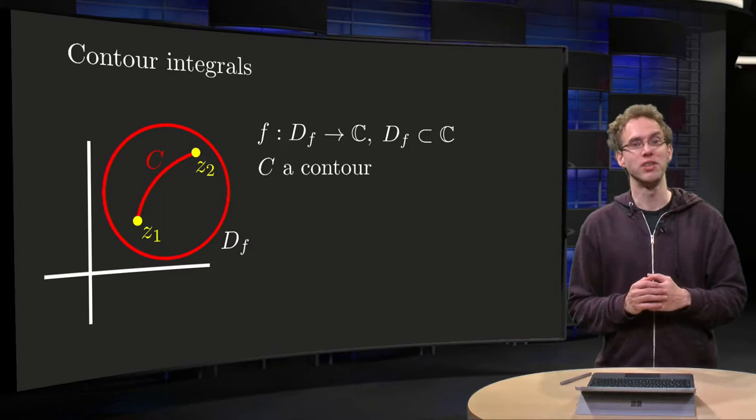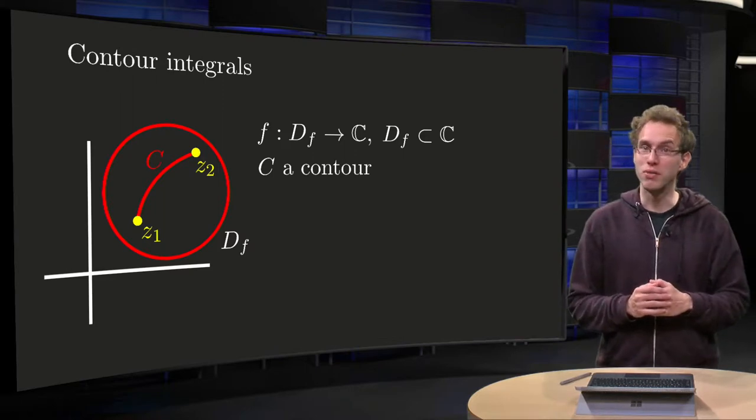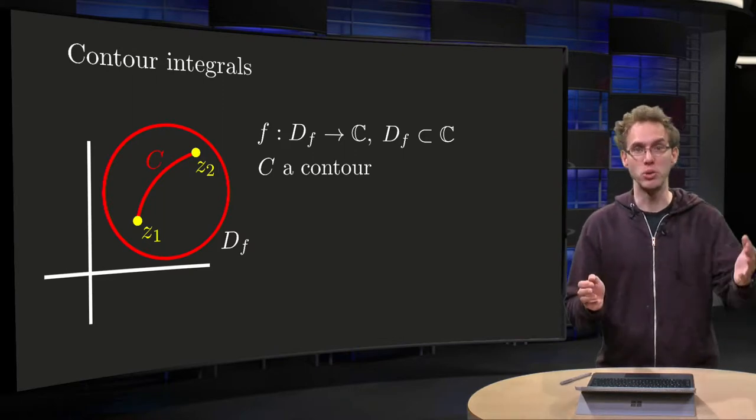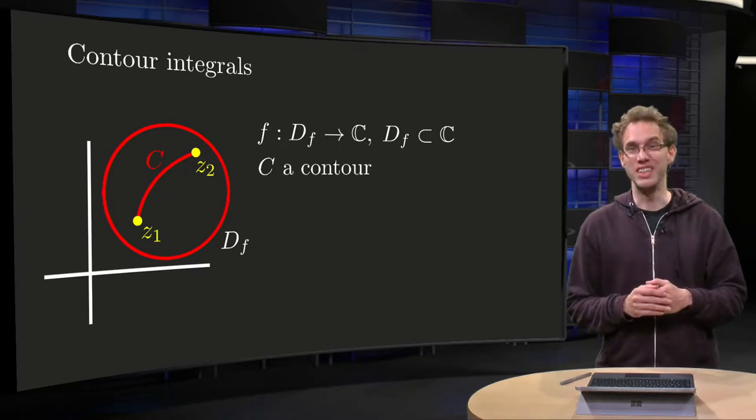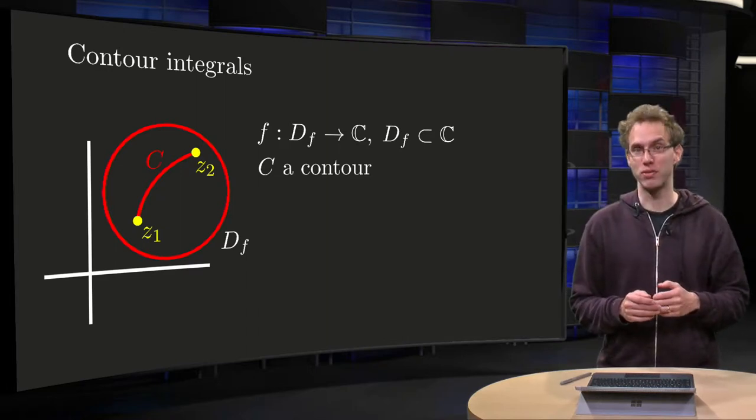A complex function f of z resembles a real vector function from R2 to R2. The contour integrals will resemble the line integral of vector fields.